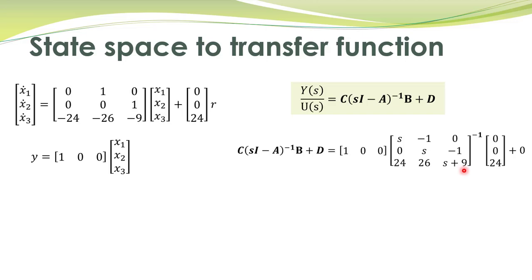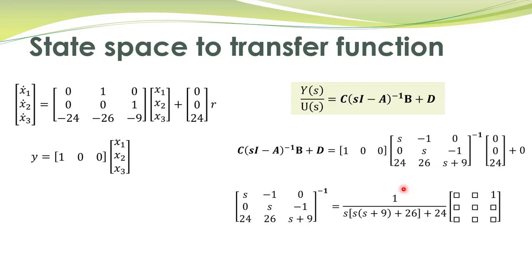To compute this transfer function, I need to evaluate the inverse of this matrix. You already know how to compute the inverse of a matrix — that can be easily done. The inverse of this matrix equals 1 over the determinant of this matrix, multiplied by the matrix of cofactors. I have not written all of the cofactors — only this one. Why only this one? Because whatever is in the C matrix, multiplied with these zeros, will become zero. So I only need the one cofactor entry that will be non-zero.